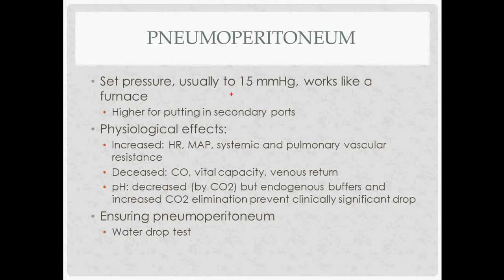Pneumoperitoneum pressure is usually about 15 mmHg. It works like a furnace — if the pressure drops a little, it puts more CO2 in. You can briefly increase the pressure higher when placing secondary ports. This creates a bit more resistance to push against, helping ensure you don't hit underlying structures like intestines when jamming in that secondary port.